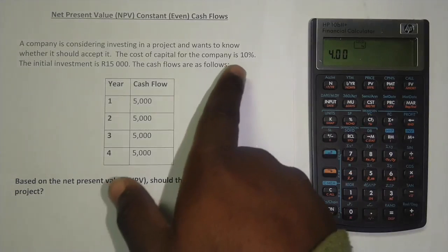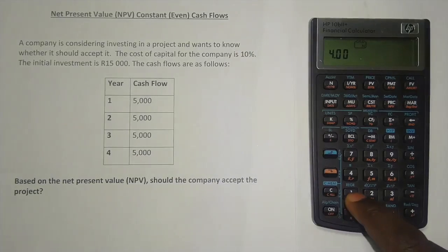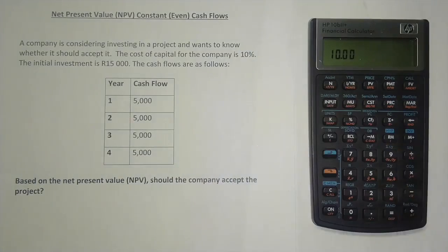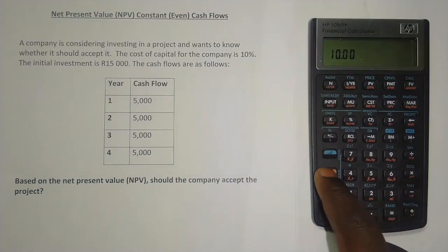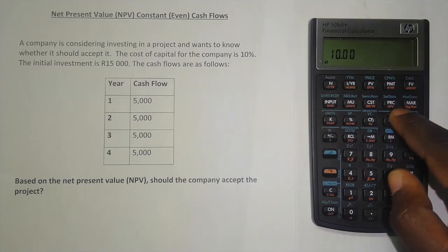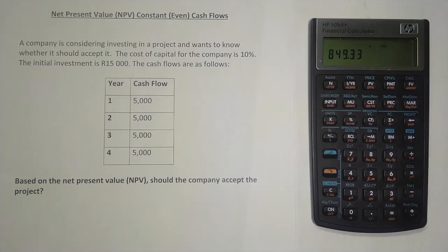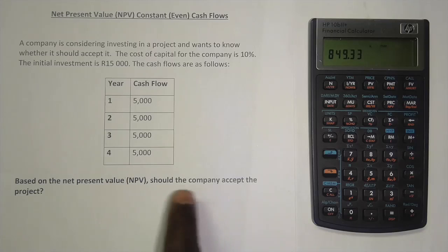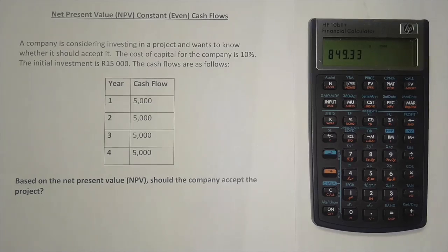Next, enter the interest rate of 10% by pressing 10 and then I/YR. Now press the orange button and press the key where NPV is written underneath — labelled PRC — and we have calculated our net present value: 849 rand 33 cents. The company should accept the project because the net present value is positive. That's the first way of calculating the NPV when you have constant cash flows using this calculator.